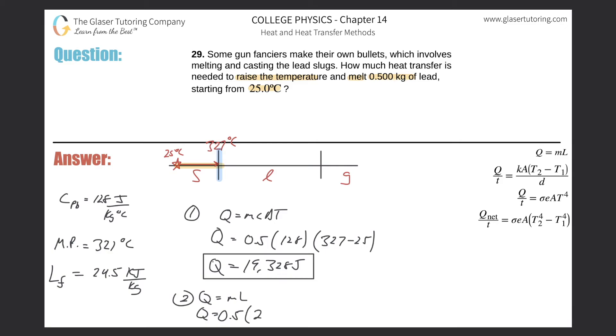And the latent heat now of fusion, since we're talking about melting, it's going to be 24.5 kilojoules per kilogram. But you got to be careful - you need the units to be consistent. So I would suggest you multiply this by 1000, so it's really going to be 24,500.